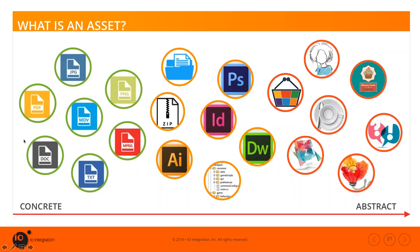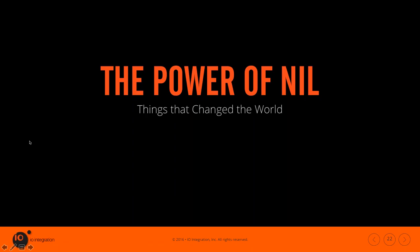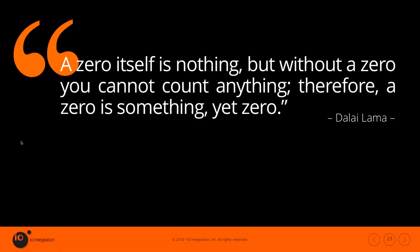As an analogy, we could talk about the concept of zero in mathematics. It took centuries to emerge, but was a huge breakthrough because it allowed for the theoretical and conceptual view of how we count numbers. A zero itself is nothing, but without a zero, you cannot count anything — therefore a zero is something, yet zero. Mind blown, right? Very deep.